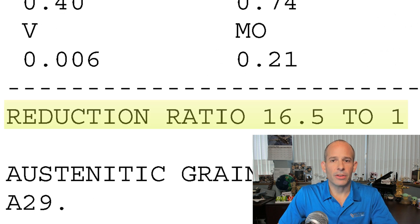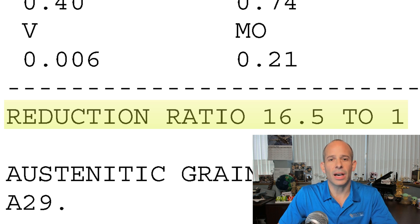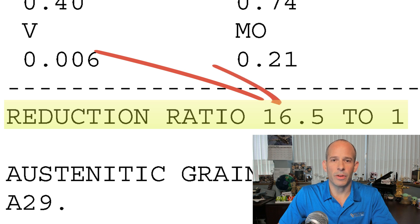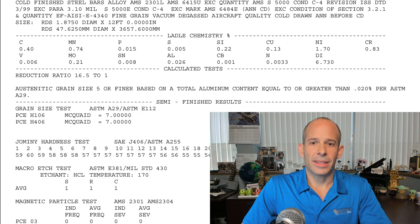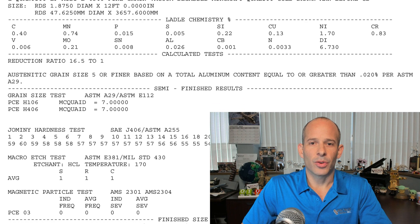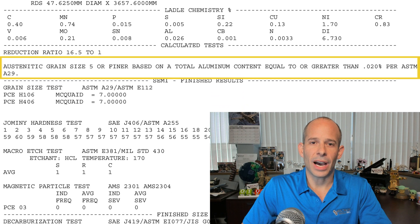To avoid any confusion in this section, the mill is reporting the reduction ratio — the amount of hot working the material has undergone. The ratio is the cast cross-section area to the final hot-rolled bar cross-section area. In this case the cast size was 16.5 times as large as the hot-rolled bar.